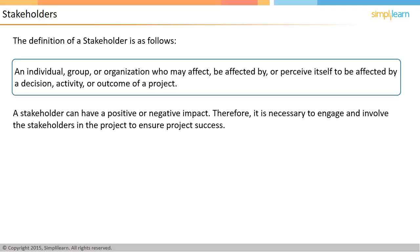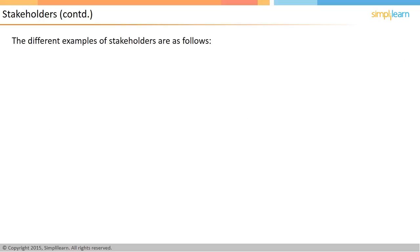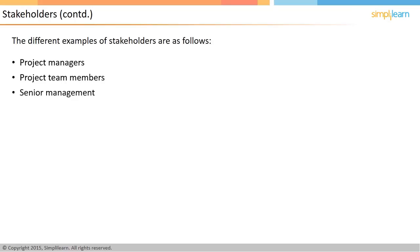There are several categorizations of stakeholders. The project managers themselves are important stakeholders. The project team members represent stakeholders in the project. The senior management of the organization working on the project has a stake in the project. The sponsor — the person or entity that provides the money and resources for the project and essentially champions the project — is an important stakeholder.